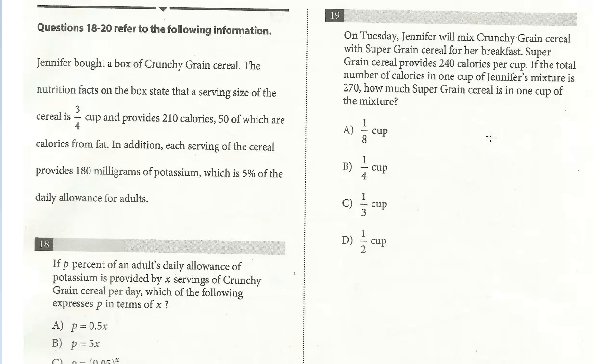In this lesson, we'll continue our review of Math Test 9, Section 4, Calculator Permitted. We're now on questions 18 through 20, and all three of these questions relate to the following information. Jennifer bought a box of crunchy grain cereal.